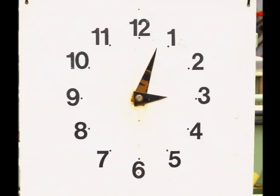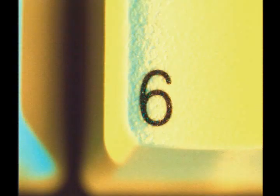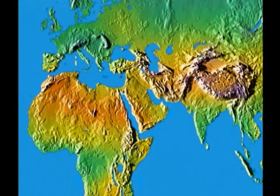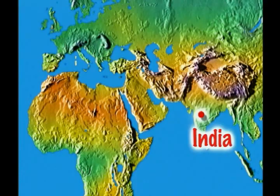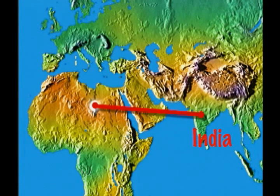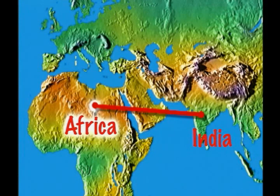To understand how the Maya did math, it is important to look at our own system first. The numbers we use today are called Hindu-Arabic numerals. These numbers originated in India, but it wasn't until they made it to the Arab people in North Africa that they were transformed into the symbols that we use today.